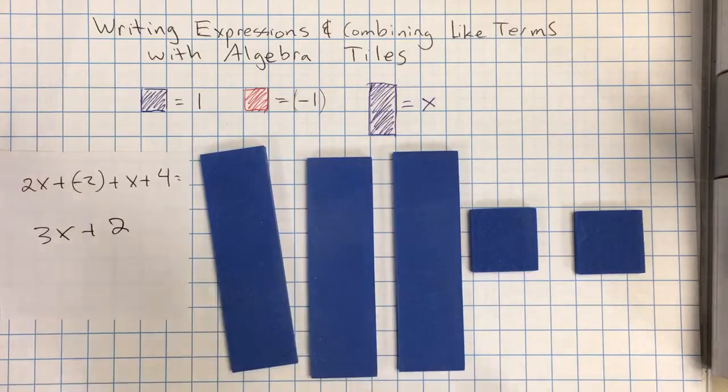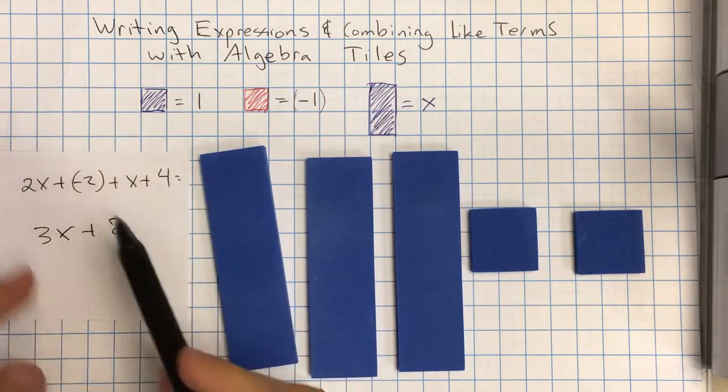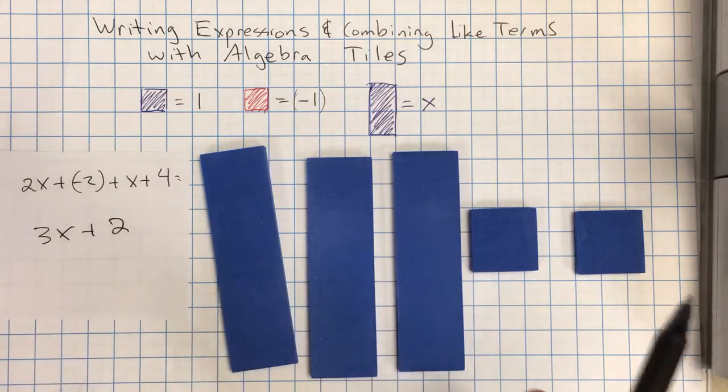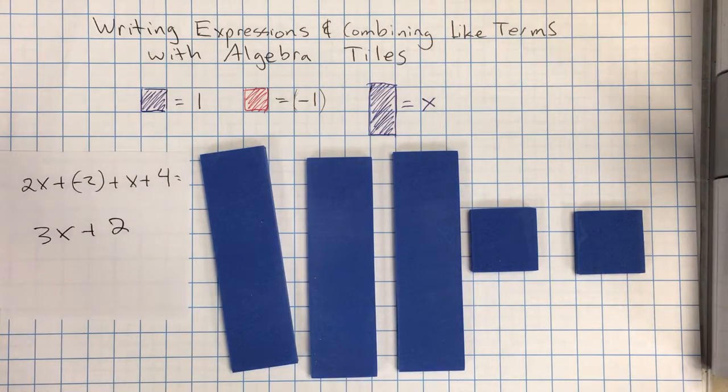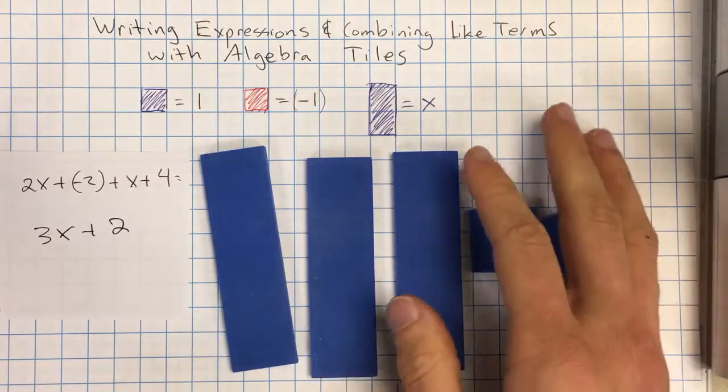So it's just a way to sort of simplify, combine the x's together, combine the whole numbers or integers together. And this is sort of what we get. And this is the first step to when you actually want to start doing algebra or solving equations. And that's just laying out an expression of what it looks like.